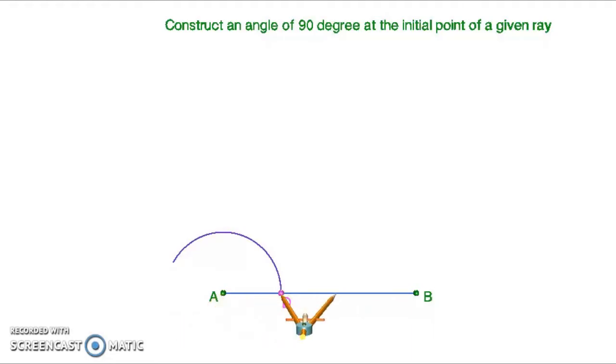It cuts the line AB at point D. Now measure AD and cut the drawn arc. It cuts the previous arc at point E. Now measure DE.